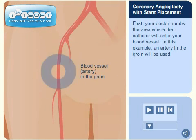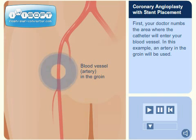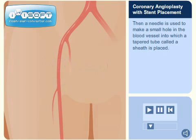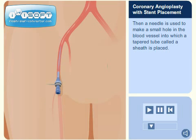First, your doctor numbs the area where the catheter will enter your blood vessel. In this example, an artery in the groin will be used. Then a needle is used to make a small hole in the blood vessel, into which a tapered tube called a sheath is placed.